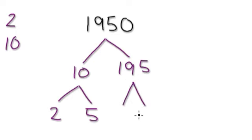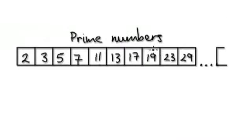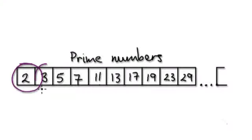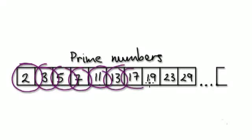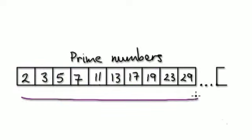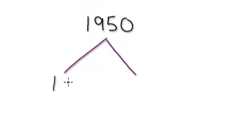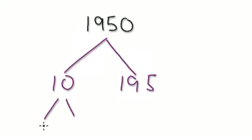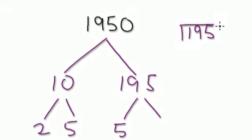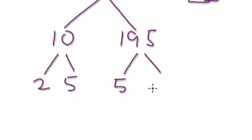For 195, I can break this up as 5 times something, because if you look at the last digit here, it's a 5. So it's quite useful to have some idea of the first few primes. Visualize this as 10 times 195, and then 10 as 2 times 5. Now visualize 195 as 5 times something. So 195 — I know I can divide by 5. 19 divided by 5, without going over, would be 3 remainder 4. So 45 divided by 5 would be 9, giving us 5 times 39.